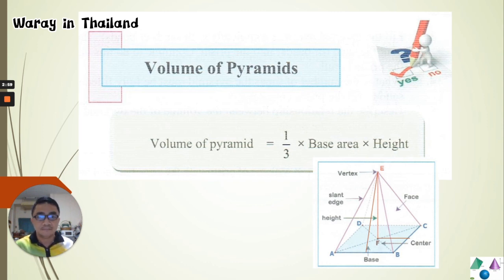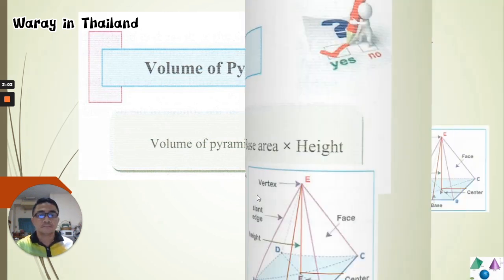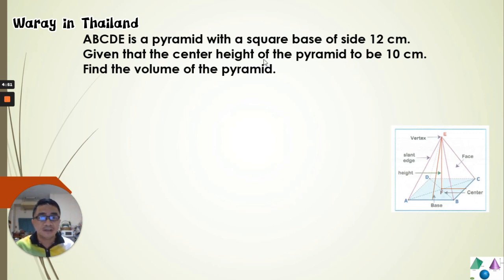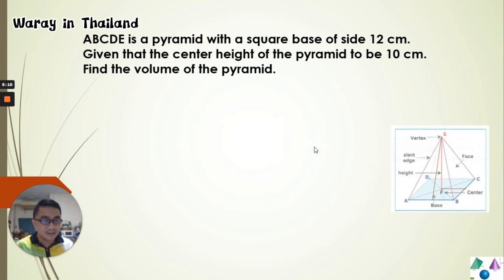Now we're going to apply this formula to find the volume of the pyramid. Example number one: ABCDE is a pyramid with a square base of side 12 centimeters, and the center height of the pyramid is 10 centimeters. Find the volume of the pyramid. The given values are: square base side = 12 cm, and center height = 10 cm.